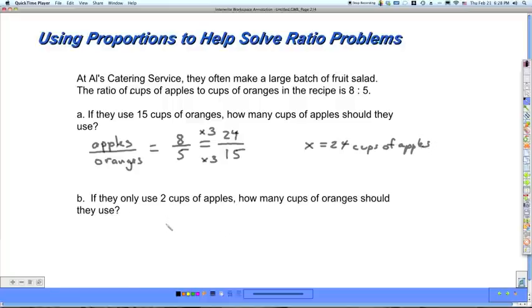Part b: If they only use 2 cups of apples, how many cups of oranges should they use? We're going to set up our labels here: apples and oranges. I know that those are in the ratio always of 8 to 5, and now I have 2 cups of apples. That will go up here. That's the usefulness of the labels as they remind you the amount of apples always goes up in the numerator the way we've got it set up, and oranges is going to go in the denominator. This is the number that I'm looking for here.